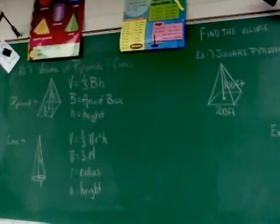Chapter 10, Section 7 is entitled Volume of Pyramids and Cones. On the left side of the board, as you can see, are the formulas for those. Start with a pyramid. Volume of a pyramid is one-third B times H, one-third times B times H.